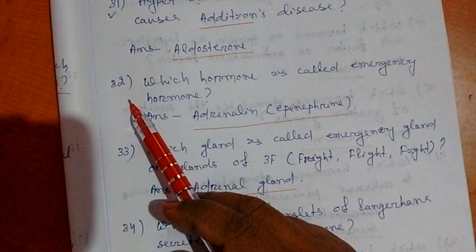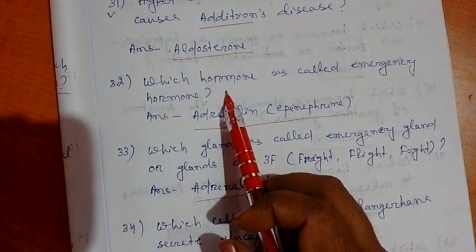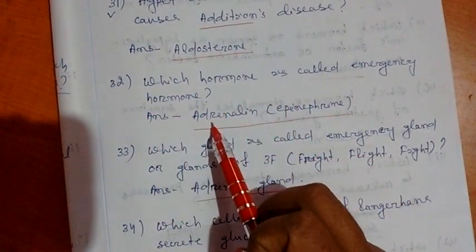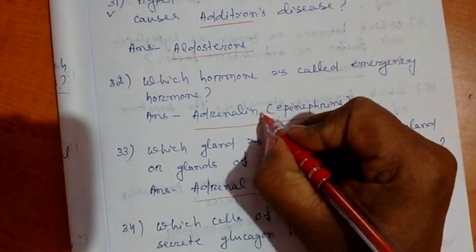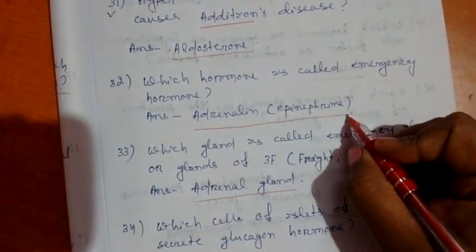Next, question number 32. Which hormone is called emergency hormone? Answer is adrenaline. It is otherwise called epinephrine.